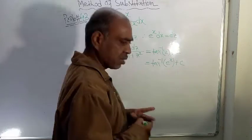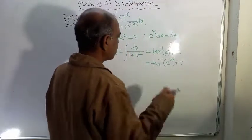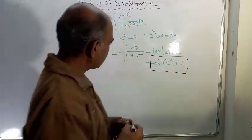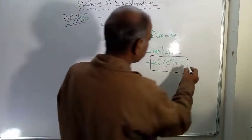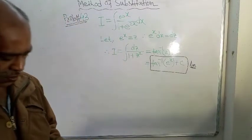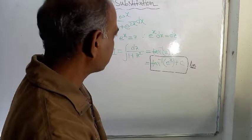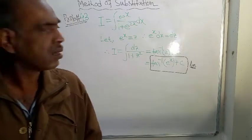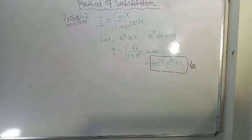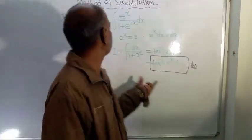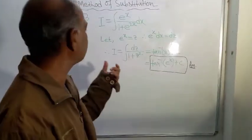So this is tan inverse z, and z equals e to the power x, so this is tan inverse e to the power x plus c. This is the answer to the given problem, and the solution procedure is very small for this problem.